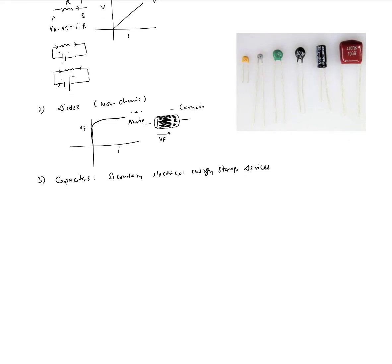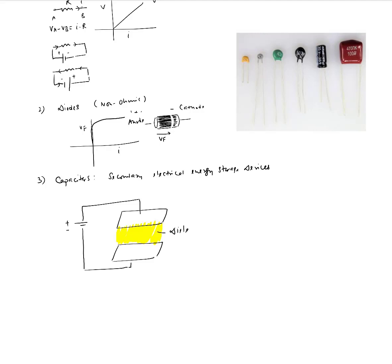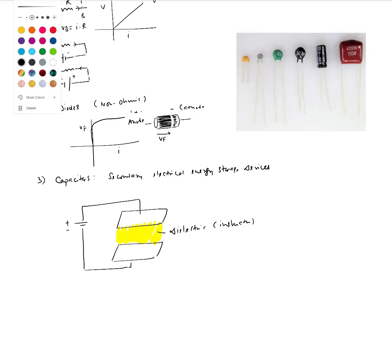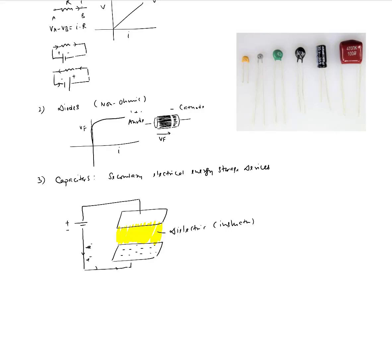Their basic construction employs two metal plates. If these two metal plates are connected via a battery — positive terminal on one side, negative on the other — and between the two metal plates we fill in some material called a dielectric, which is basically an insulator such as air, plastic, or glass that does not allow current to flow, then the electrons from the negative electrode of the battery will travel and begin to deposit on the plate connected to the negative terminal.